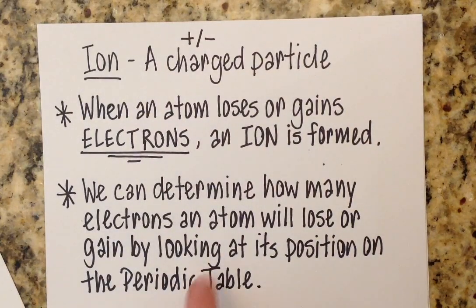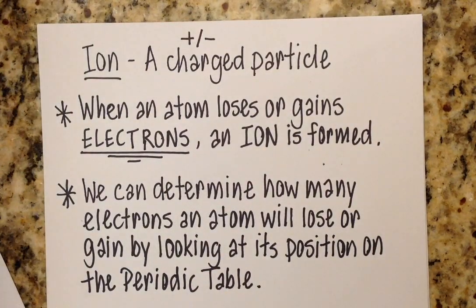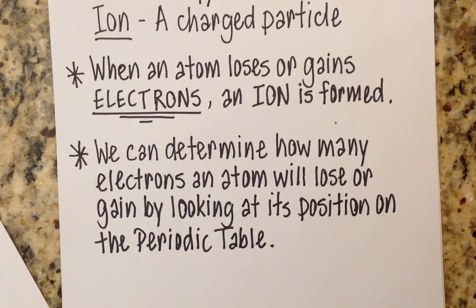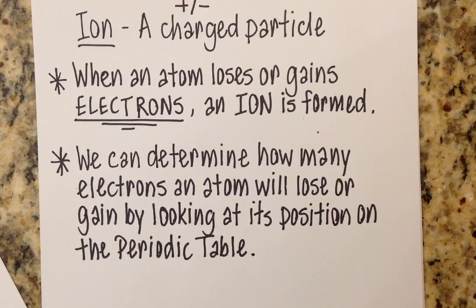So when I said that we can determine how many electrons an atom will gain or lose by looking at its position on the periodic table, that is what I am referring to.